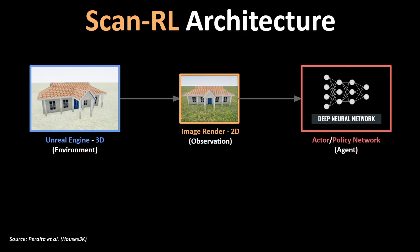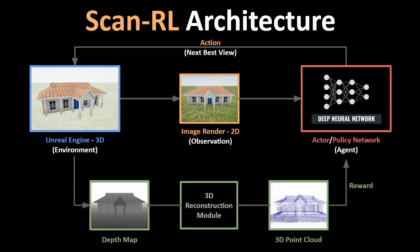The neural network has to learn a policy to decide what the next best view is, so it is essentially learning to control the path of the drone capturing these images. In order to give rewards to this policy network, a 3D reconstruction module is used to reconstruct a point cloud from currently captured depth images. The accuracy of this 3D point cloud reconstruction decides whether the reward will be positive or negative. Hence, using any off-the-shelf reinforcement learning algorithm, this network can be trained to optimize the scanning process.